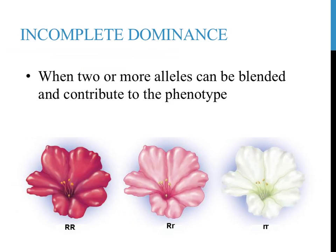With complete dominance, every example we have discussed up to this point showed one trait always masking or hiding another trait. As you can see on this slide introducing incomplete dominance, sometimes that is not the case. While individuals that are homozygous dominant, shown on the left with the red flower, and homozygous recessive, shown on the right with the white flower, exhibit the same patterns of inheritance that you've seen before, individuals that are heterozygous don't show a dominant trait. They exhibit a blending of two characteristics — red and white make pink.